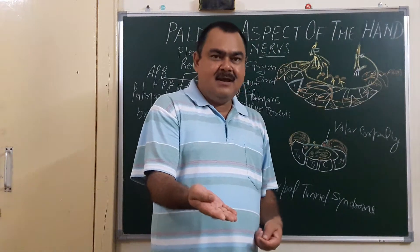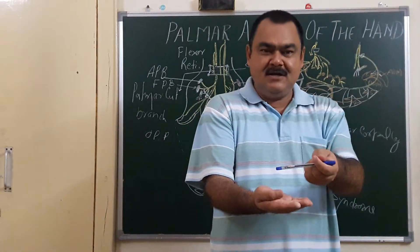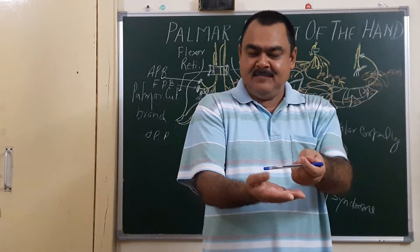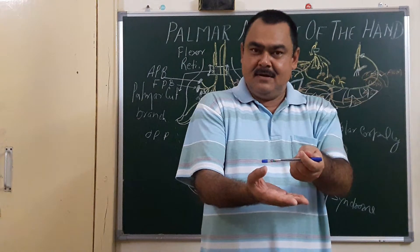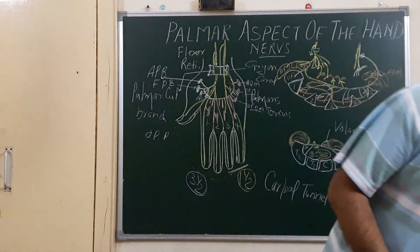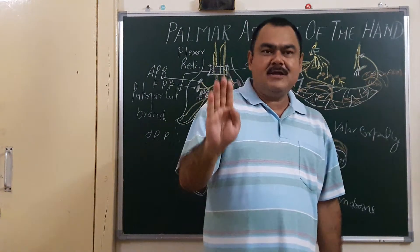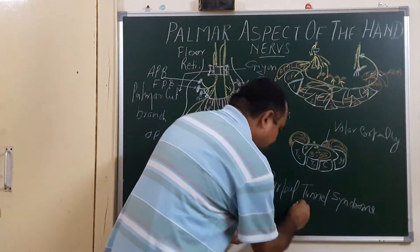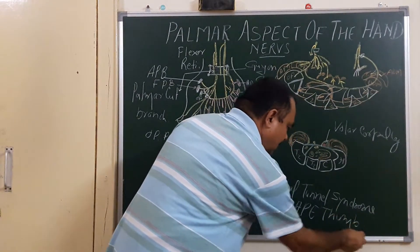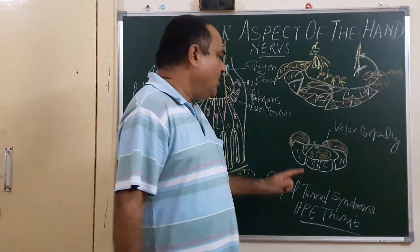This can be tested by the pen test: place a pen here and ask the patient to touch the pen. If the nerve is intact, the patient can touch the pen. If the median nerve is compressed, the patient cannot touch the pen. A typical presentation is the thumb adducted, which is known as ape thumb deformity.